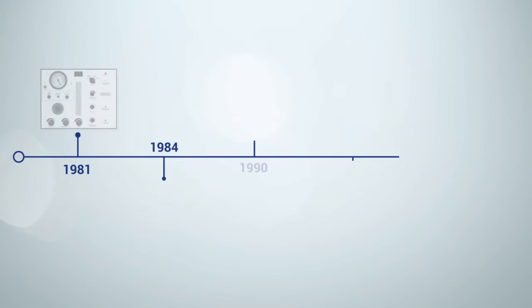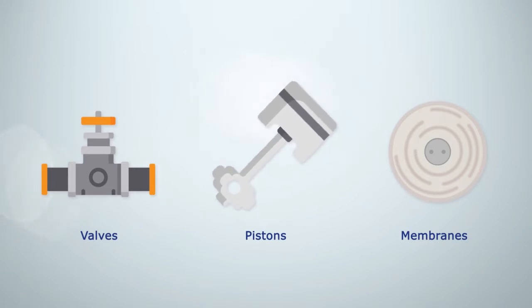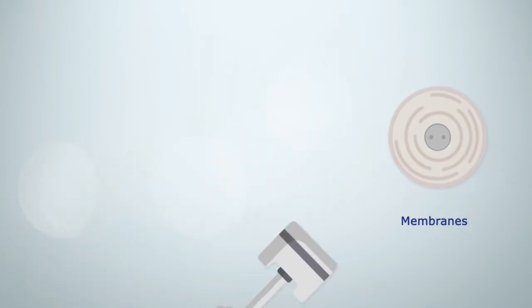Over the years neonatal ventilator manufacturers have used a variety of ways of controlling the ventilation a baby receives. These include valves, membranes and pistons in a multitude of configurations but each of these systems can be problematic.